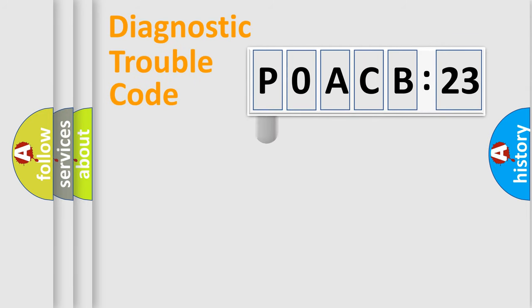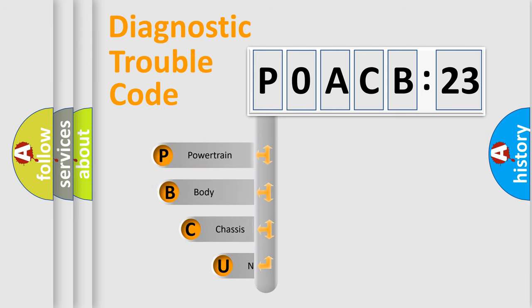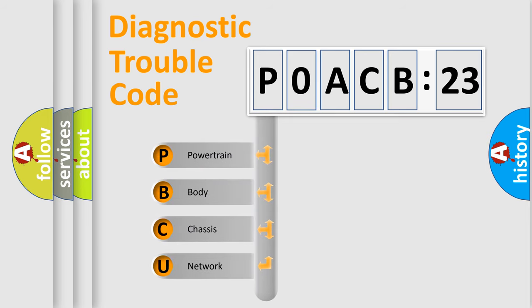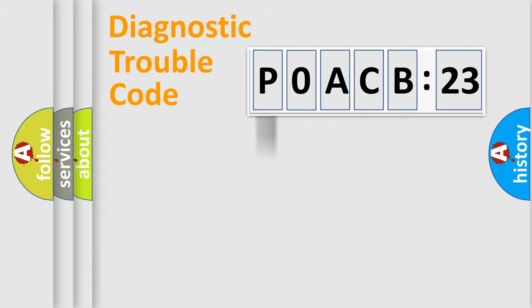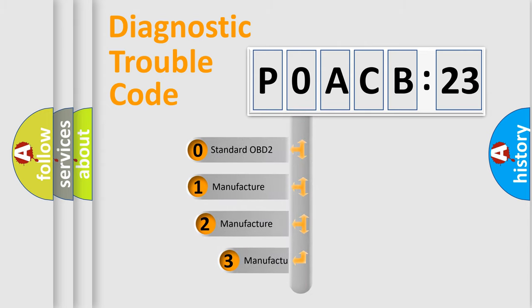First, let's look at the history of diagnostic fault code composition according to the OBD2 protocol, which is unified for all automakers since 2000. We divide the electric system of an automobile into four basic units: Powertrain, Body, Chassis, and Network. This distribution is defined in the first character of the code.